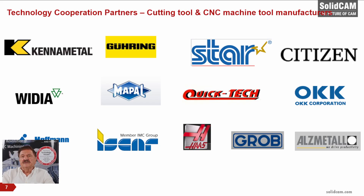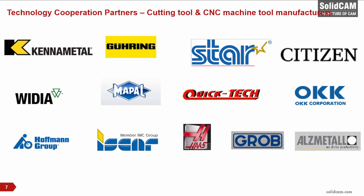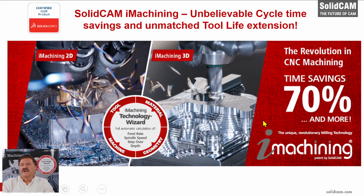We also have excellent technology cooperation partners. We have great cooperation with KenaMetal and Vidya, training their technical sales staff. We have great cooperation in Germany with Hoffman Group and Goering, and also with ISCAR. With machine tool companies, we have cooperation with Star and Citizen for our Swiss-type solution, QuickTech, and with Haas in many countries, as well as Grob, ArtsMetal, and OKK.